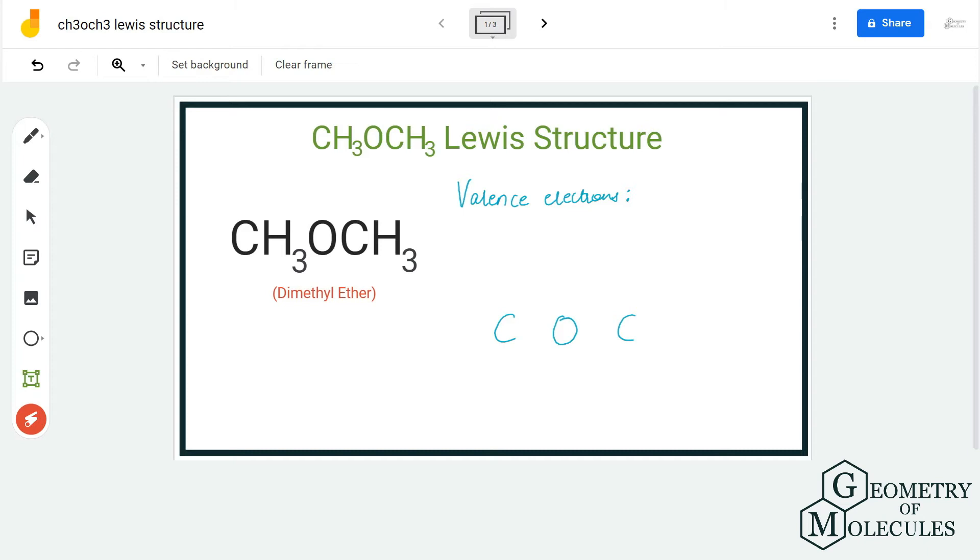Hi guys, welcome back to our channel. In today's video, we are going to determine the Lewis structure for CH₃OCH₃, which is also known as dimethyl ether. It has a very simple Lewis structure, and you can actually determine it by just looking at this chemical formula.